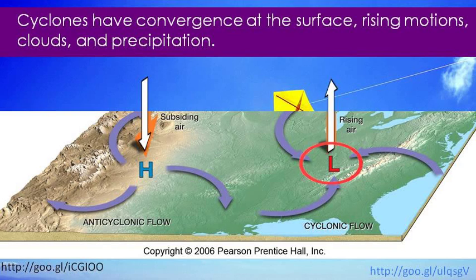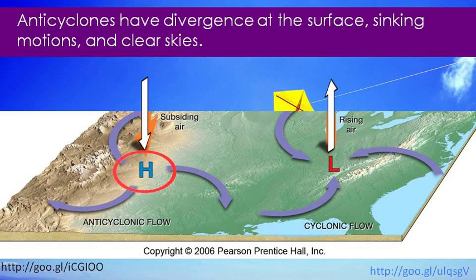Cyclones have convergence and rising motion at the center. Anytime you have rising motion, you should be thinking clouds and precipitation — cyclones, areas of low pressure, tend to have stormy weather. In contrast, anticyclones have divergence at the surface and air sinks from mid-levels of the atmosphere down to the surface. Sinking motion is always associated with fair weather and clear skies. So high pressure systems, or anticyclones, are always associated with relatively fair weather.